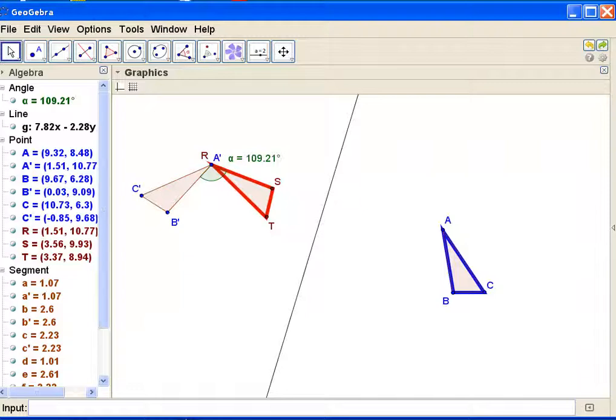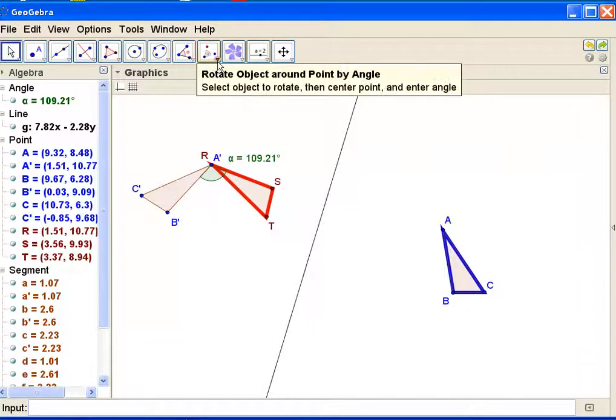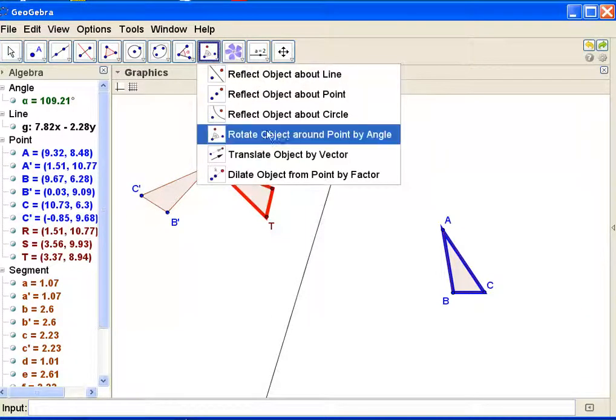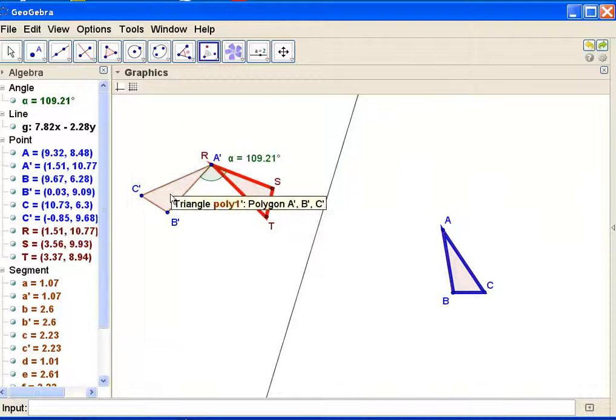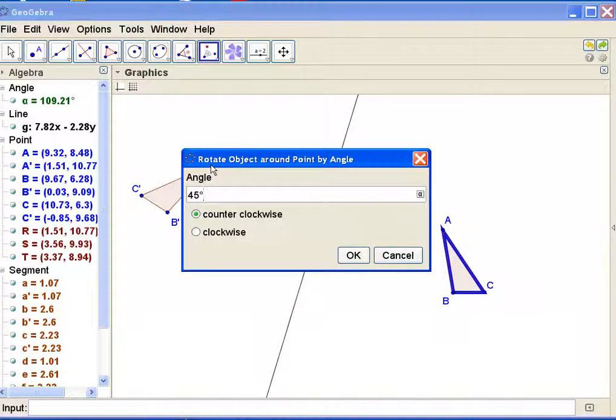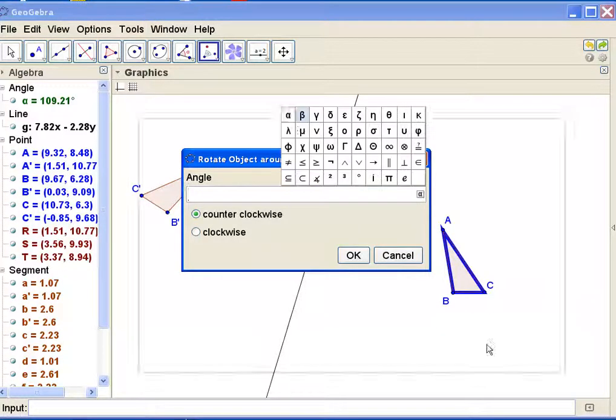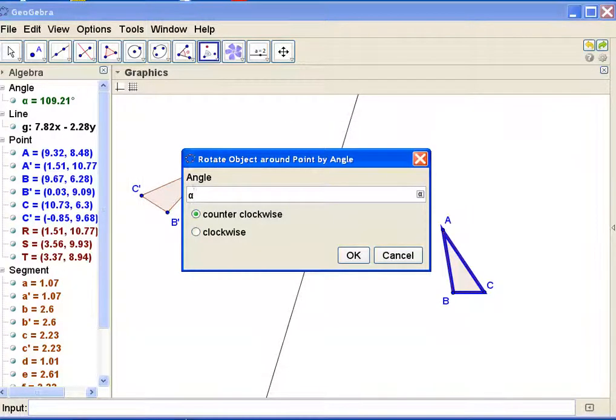Now I'm ready to do my rotation. I'll get my rotation tool and it says I need to click the object, then the center point, then the angle. This is the object. This is my center point. And the angle that I want to do is angle alpha. And I am going to do it counterclockwise.